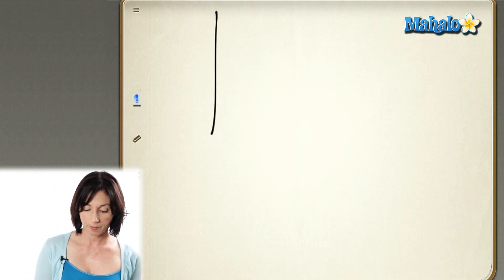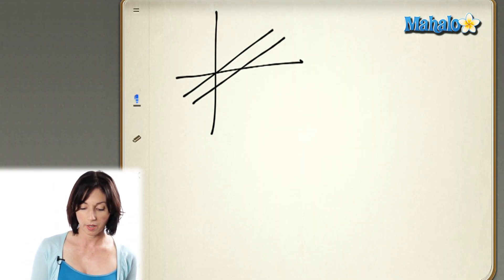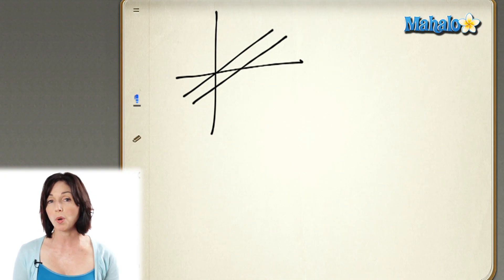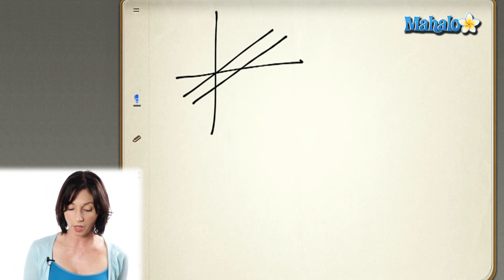Parallel lines will have the same slope. They run parallel to each other and they won't ever intersect each other. So if you see two equations of lines,